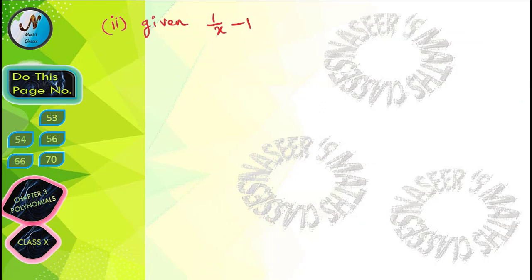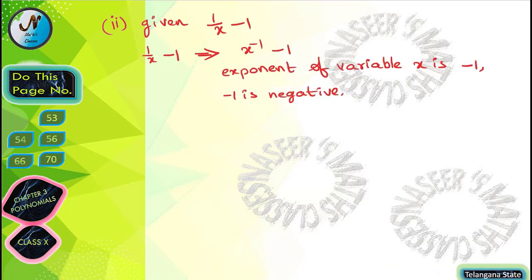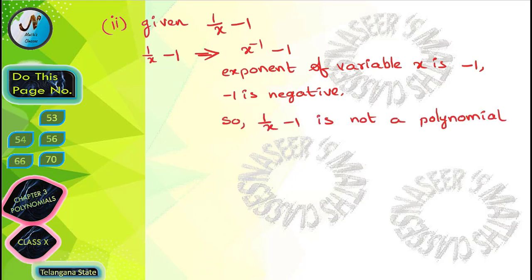Next, second one given 1/(x-1). This can be written as x⁻¹ - 1. So here the exponent of the variable is -1. So -1 is negative. So 1/(x-1) is not a polynomial.